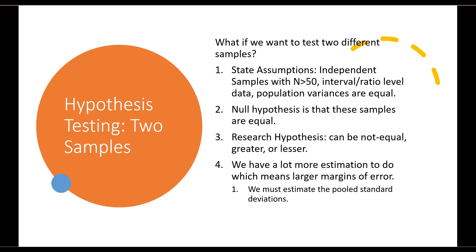So far we've talked about comparing our sample to a specified value. But what if we want to compare two populations using two different samples? Our assumptions are that we have independent samples — selected independently from each other — with both samples having more than 50 cases, interval or ratio level data, and population variances that are equal or at least very close. The null hypothesis is that the two samples are equal, and the research hypothesis can be not equal, greater, or less. With two samples, we have larger margins of error and need to calculate what is called the pooled standard deviation.